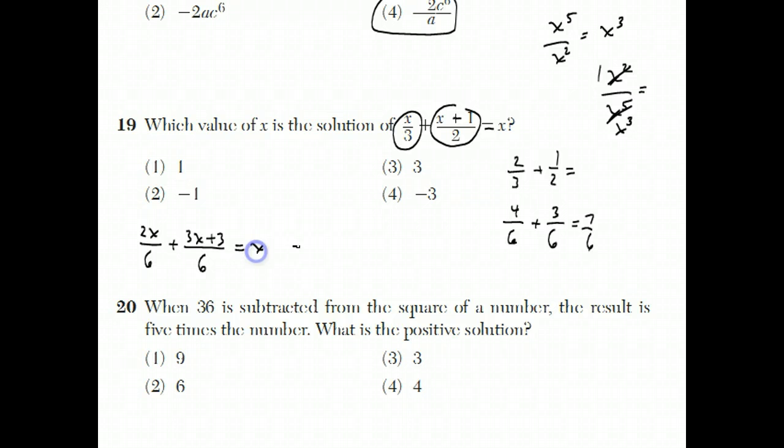That's going to equal x. When you combine those two fractions, you get 5x plus 3 over 6 equals x. I like to cross-multiply. So I get 5x plus 3 equals 6x. And then when I subtract 5x from both sides, I get x equals 3, which is the answer to number 19.